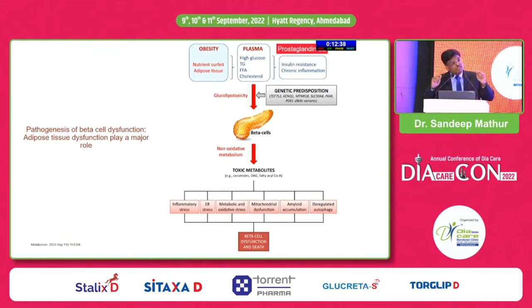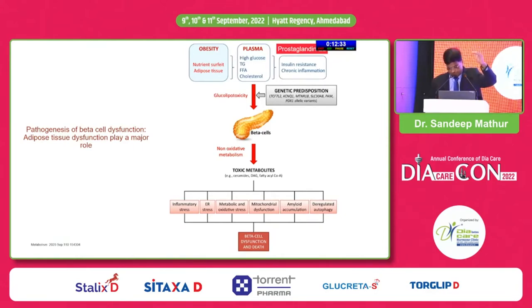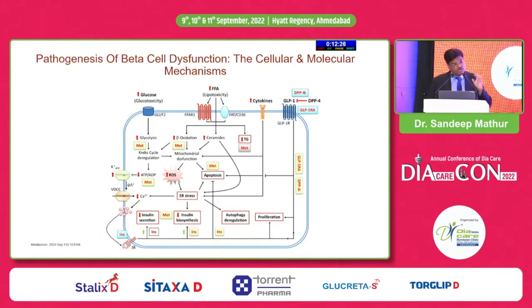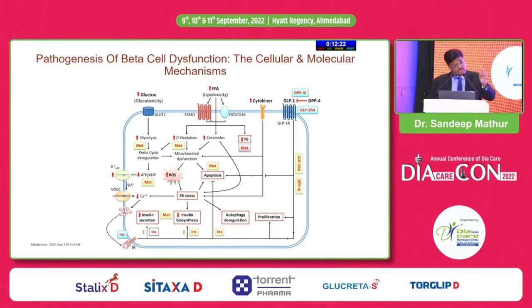These are all basically consequences of hyperglycemia, high free fatty acids, and adipose tissue inflammation. What is more important is your free fatty acid level around your beta cell and your glucose level around your beta cell.